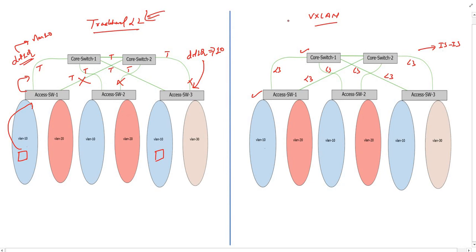To resolve this problem, we need an encapsulation mechanism which encapsulates the layer 2 frame into layer 3 packets. Moreover, we need to insert VLAN information also in this encapsulating packet so that destinations can understand where to forward these frames.